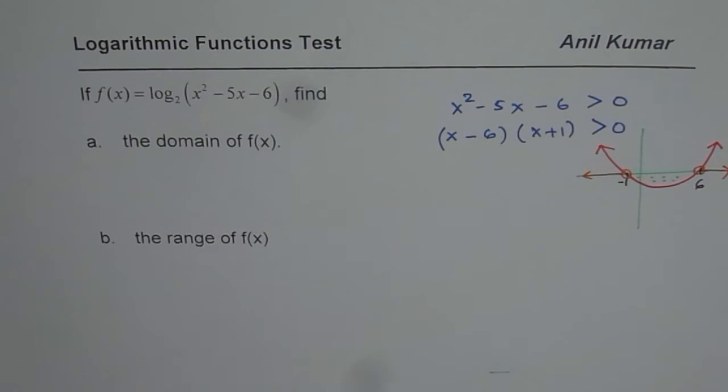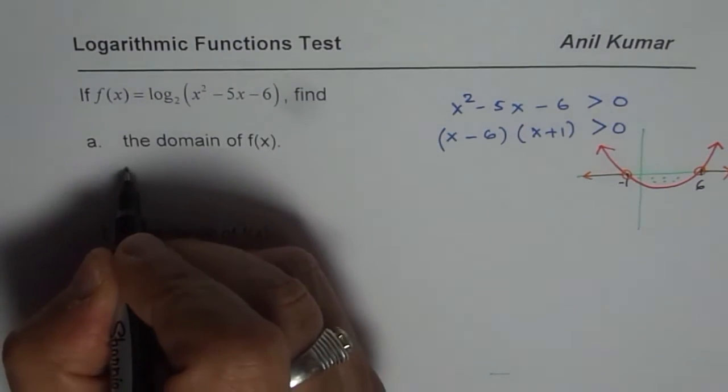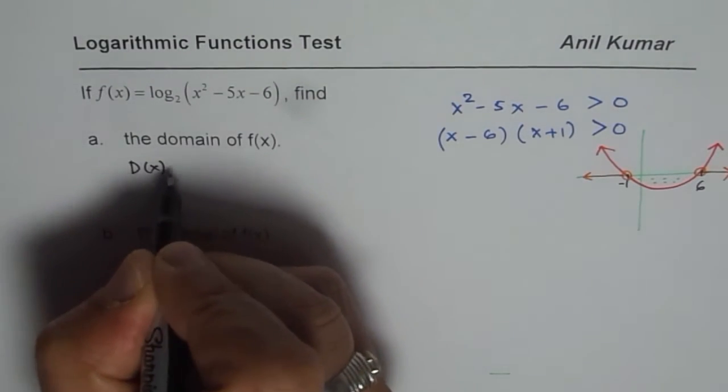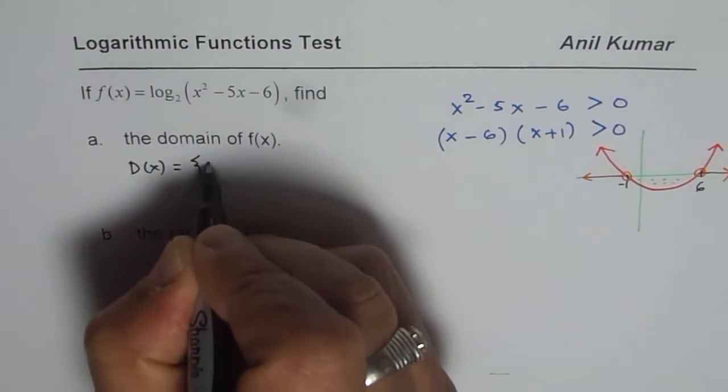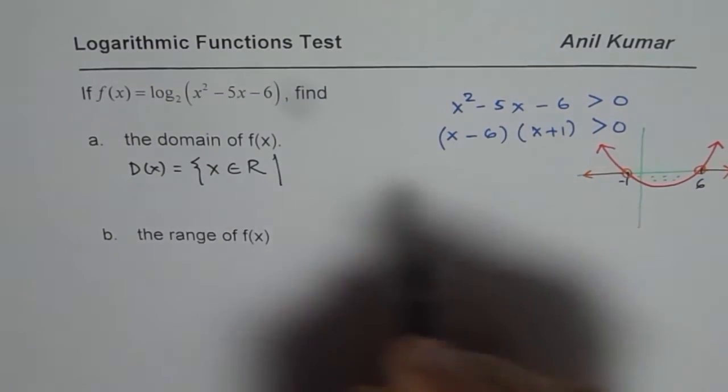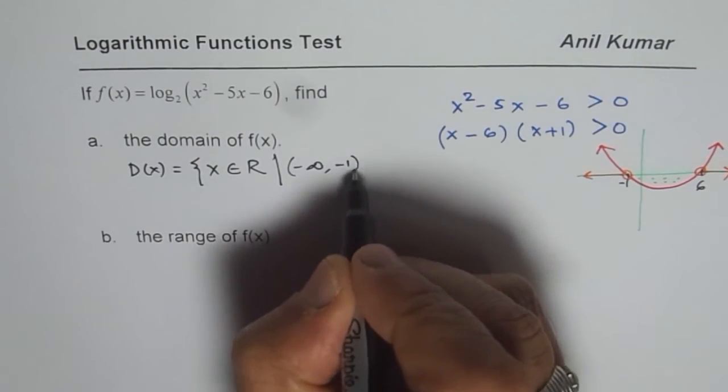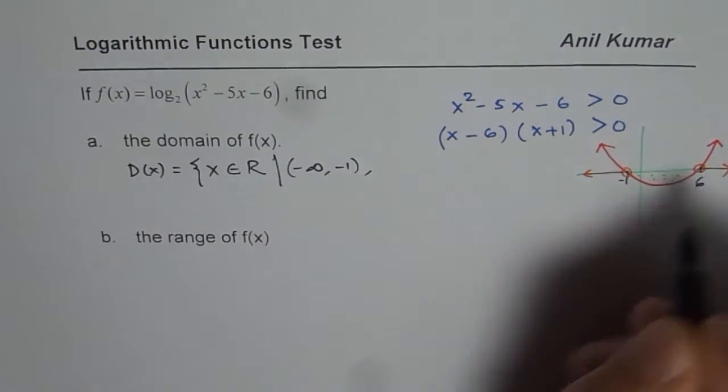Is that okay? So, that gives us the domain for the function. You get the idea. So, from here, we can write that the domain of the function is x belongs to real numbers,